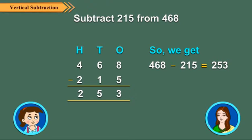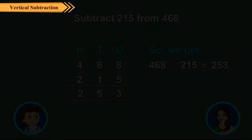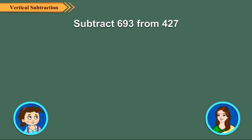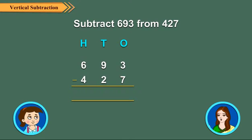Children, this was an example of subtraction without regrouping. Now, let us see how we regroup tens to 1's in a 3 digit subtraction. Let us find 693 minus 427.